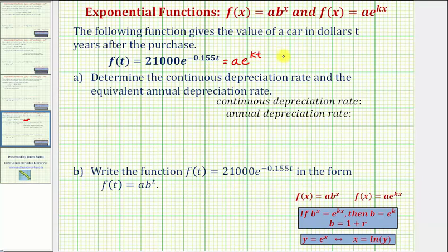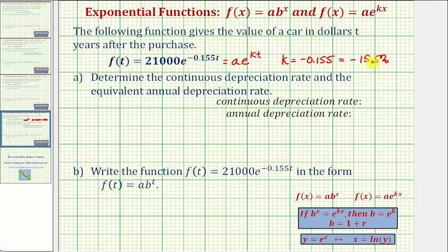Notice in our function k is equal to negative 0.155. Because k is negative, we know we have exponential decay, or in this case depreciation. As a percentage, this would be negative 15.5%, and the continuous depreciation rate — the absolute value of k — is therefore 15.5%.